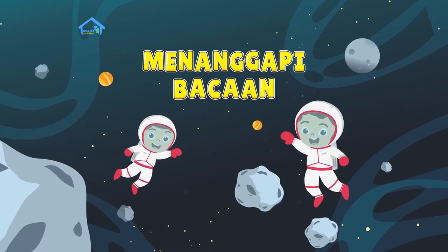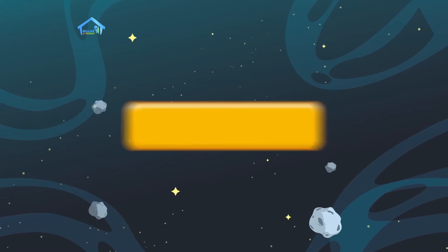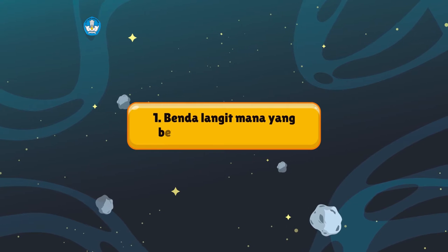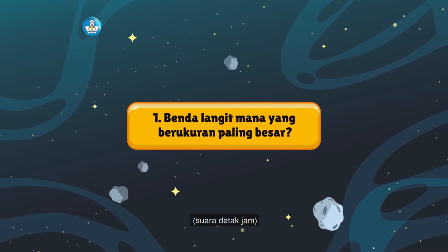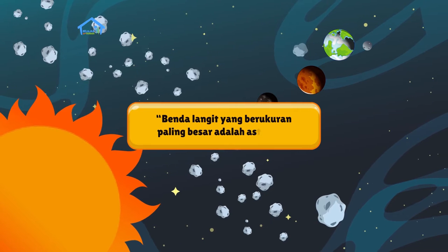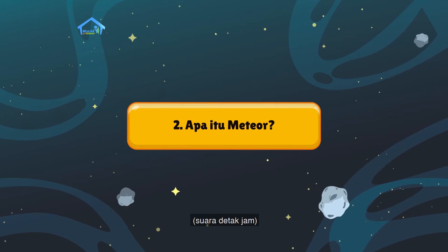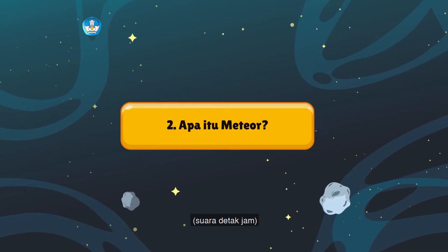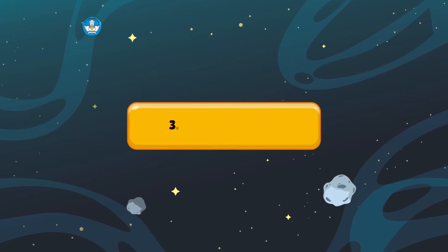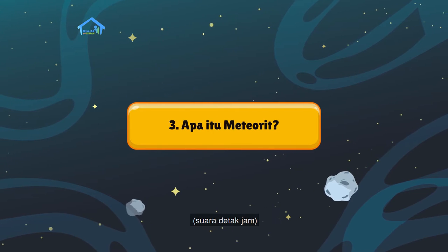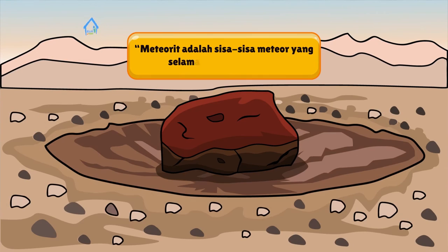Menanggapi bacaan: Ingat kembali benda-benda langit yang ditunjukkan oleh informasi tadi, dan jawab pertanyaan berikut. 1. Benda langit mana yang berukuran paling besar? Benda langit yang berukuran paling besar adalah asteroid. 2. Apa itu meteor? Meteor adalah meteoroid yang jatuh dan menembus atmosfer bumi. 3. Apa itu meteorit? Meteorit adalah sisa-sisa meteor yang selamat sampai di bumi.